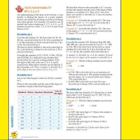A number is divisible by 4 if the number formed by the last two digits is divisible by 4. Consider the number 324. We know that 100, 200, 300, 400 and so on are all divisible by 4. How?